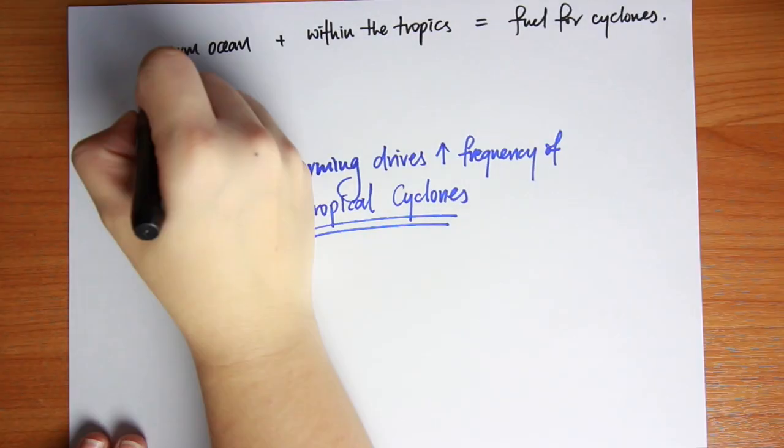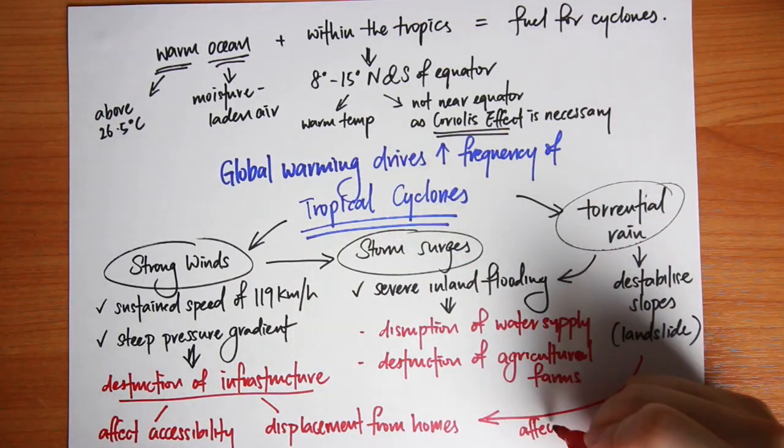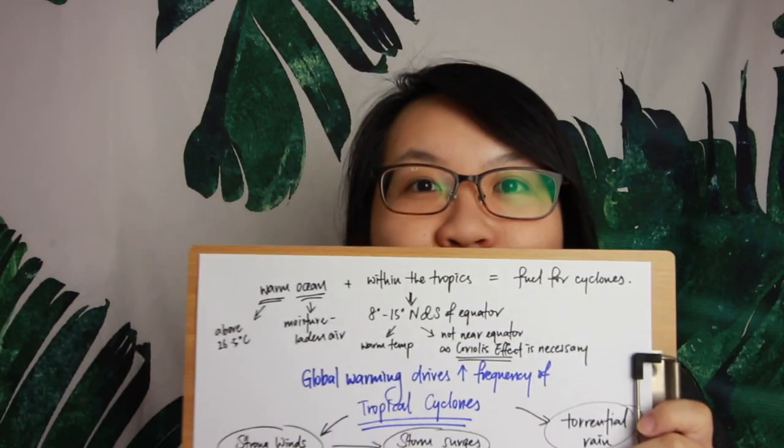In this video we're going to look at Gateway 3 of weather and climate, exploring the characteristics of tropical cyclones, the impacts they can bring, as well as what are some of the responses that can help to mitigate the impact of tropical cyclones.